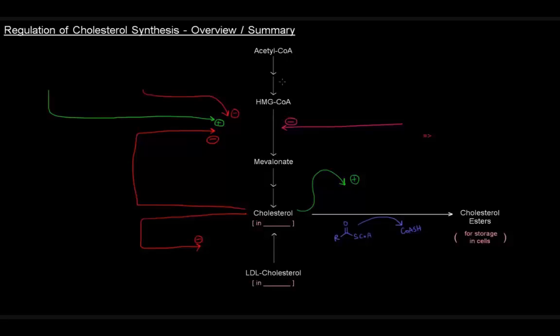We know that we go from acetyl-CoA to HMG-CoA and take HMG-CoA to mevalonate in the committed step catalyzed by HMG-CoA reductase. Mevalonate is eventually converted into cholesterol, and that cholesterol that we're making is specifically in the cells.